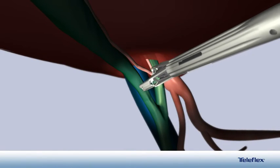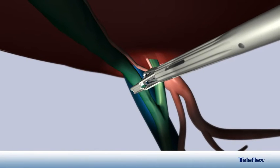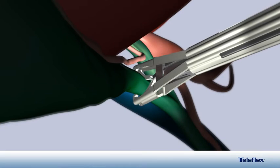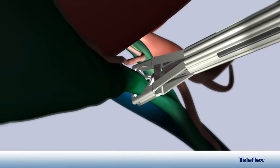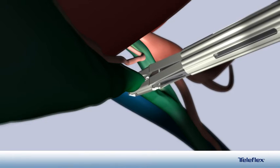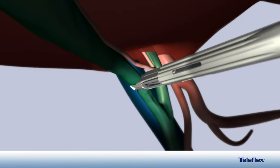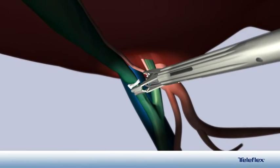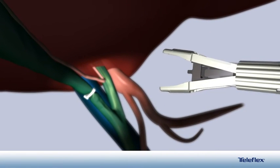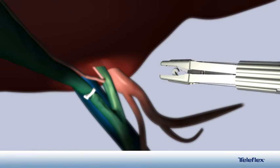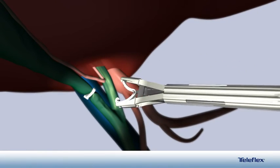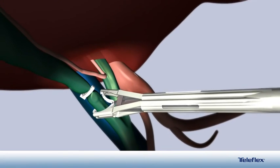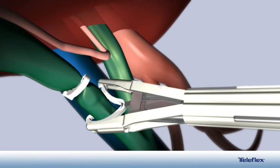The surgeon places the clip across the cystic duct near its origin from the gallbladder. The surgeon confirms the clip is completely surrounding the cystic duct and then locks the clip. At this point, the surgeon removes the jaws of the applier from the structure prior to loading another clip. Note that the clip is not loaded into the jaws of the applier while touching the underlying structure. Clear visualization of the clip around the structure is the key to achieving a secure lock.